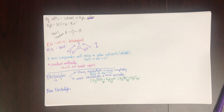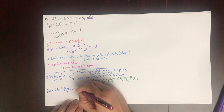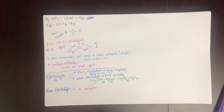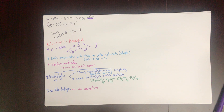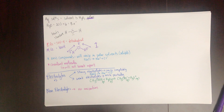Non-electrolytes do not break apart at all — no ionization. That's the key difference: electrolytes ionize in water (fully or partially), while non-electrolytes do not. Water is polar, and ionic things ionize in polar substances because of the ion-dipole interaction.